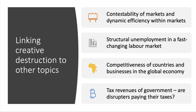There's also a link to fiscal policy. The disruptors — Uber, Airbnb, Netflix and others — are they profitable, and are they paying their taxes? Is there a consequence on the fiscal side? For example, driverless cars: the UK government has relied for many years on billions of pounds from fuel duty and other forms of transport taxation, including car insurance premium. Will there be a big fall in tax revenues as people switch first to electric vehicles and then potentially to autonomous vehicles? There are lots of links between creative destruction and other parts of your A-level economics course.